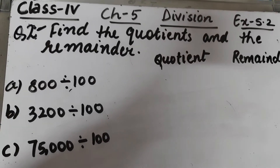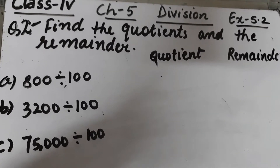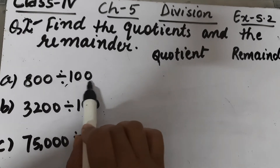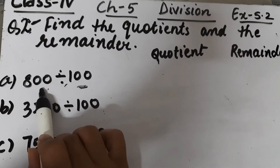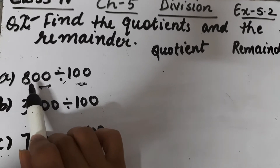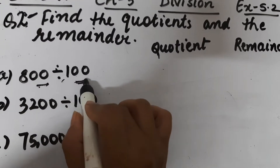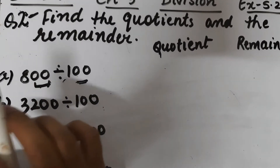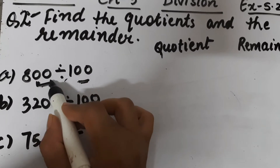Let's start question number 2 of Exercise 5.2. The question is: find the quotients and remainders. Part a is 800 divided by 100. If the divisor is 100, then the number formed by the digits in the ones and tens place of the dividend becomes the remainder, and the number formed by the remaining digits will be the quotient.